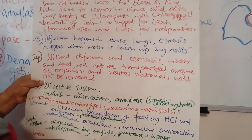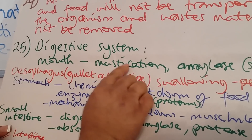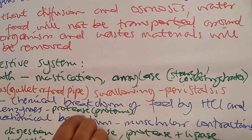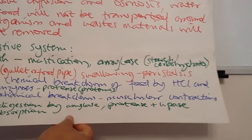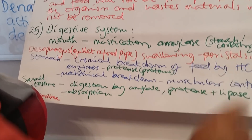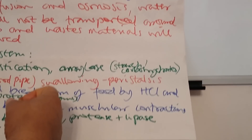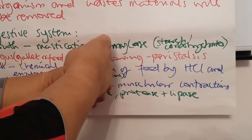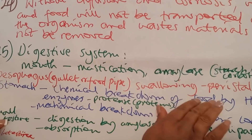Now for the digestive system — here is a quick overview of what happens. In the mouth there is chewing with the teeth and mixing with saliva — the process of mastication. This is very important because amylase is present in the saliva and the digestion of starch begins in the mouth. In the esophagus, also called the gullet or food pipe, there is swallowing and peristalsis — a rhythmic movement created when the ring-like muscles lining the esophagus close and open alternately, squeezing food along.